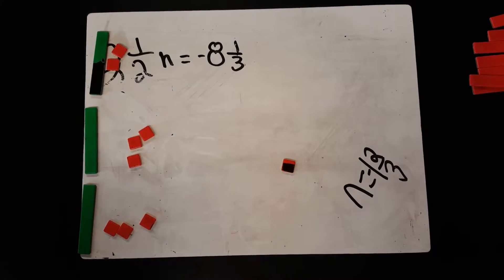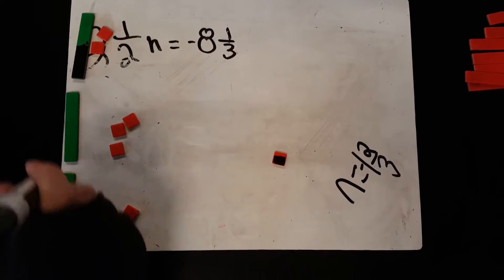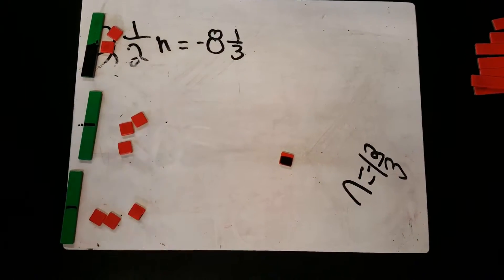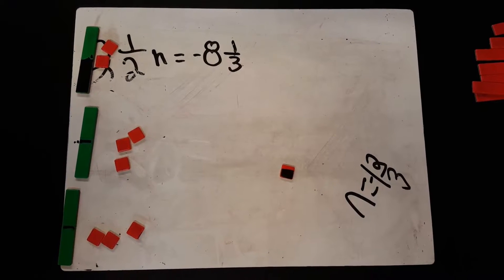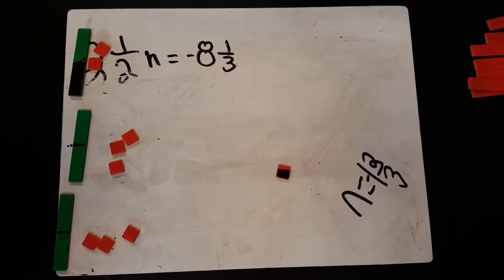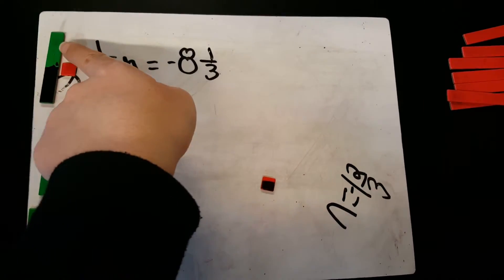So next, since they don't go into equal groups, we would have to split them into halves. And why do you split those in halves? Because if we didn't, it'd be two full groups and a half. Right, so we have to account for that half group.